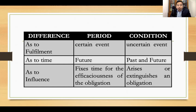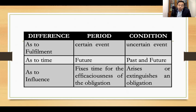Let us distinguish between a period and a condition. As to fulfillment, a period is certain while a condition is uncertain. As to time, a period is always in the future while a condition can refer to both future and past events. You remember our discussion where a condition can be pegged on a past event unknown to the parties. If the fulfillment is dependent upon a past event unknown to the parties, then condition refers to the parties discovering that past event. A period, on the other hand, is always and always in the future.